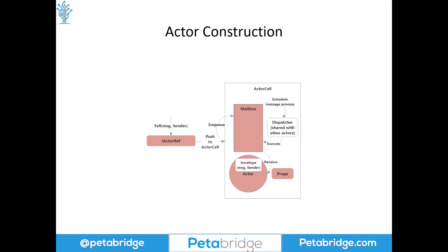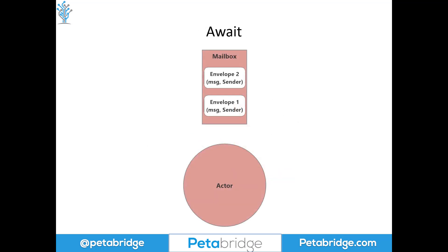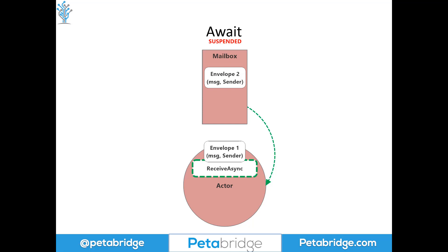We're going to look at this again in the context of what happens when an actor awaits in the middle of processing a message. When an actor awaits, we still need to uphold the one-message-at-a-time guarantee. When the actor is scheduled for execution, it's going to receive a message and process it using a receive async handler, meaning that receive handler will have at least one await statement inside it. We start processing the message, then we hit our await block, and the actor is going to suspend its mailbox — the actor's ability to process additional messages is put on hold — because in order to honor our one-message-at-a-time guarantee, we have to process everything inside the receive async statement before moving on.